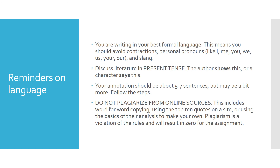Some quick reminders on your language. You should be writing in your best formal language, which means avoiding contractions — write out 'cannot' or 'should not.' Try to avoid personal pronouns like I, me, you, we, or us, and avoid any slang. Think about your words and whether they are the best words you could use. You should also discuss literature in present tense: 'the author shows this' rather than 'the author showed this,' or 'a character says this' rather than 'said.' Your annotation paragraphs — those four paragraphs — should be about five to seven sentences. Make sure you follow the steps: topic sentence, provide an example, explain the example, and link it back to the topic sentence.